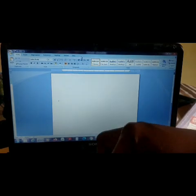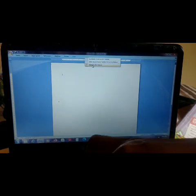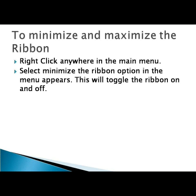This is how we maximize and minimize the ribbon menu. Give a right click, click 'Minimize the Ribbon', and again right-click and select the same option to toggle it. You can click again and again to toggle the ribbon on and off. Right-click anywhere in the menu, select the 'Minimize the Ribbon' option to toggle the ribbon on and off.